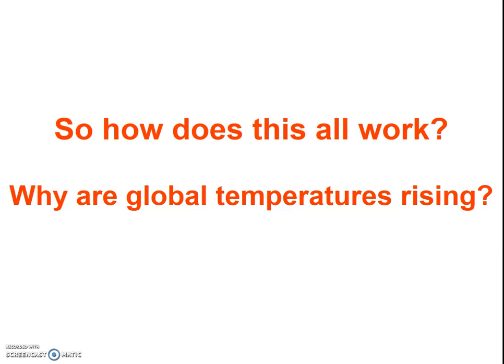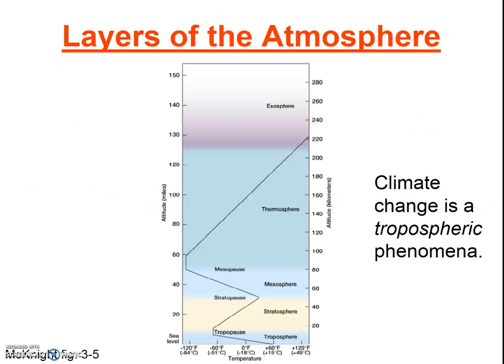Let's backtrack a bit and make sure everyone understands how the greenhouse effect works, and how anthropogenic greenhouse gas emissions can cause a rise in global temperatures. First, remember the layers of the atmosphere. Climate change is a tropospheric phenomenon — the temperatures of our oceans and our near-Earth atmosphere are rising.